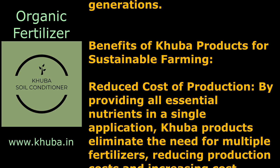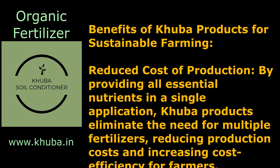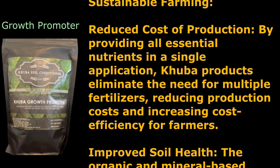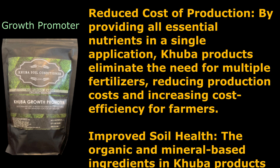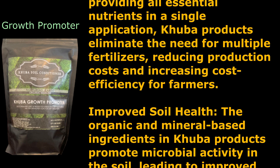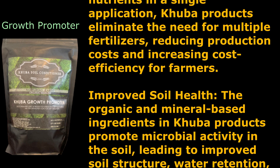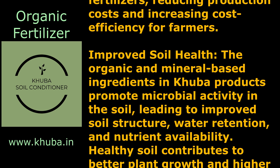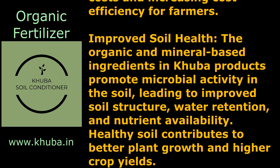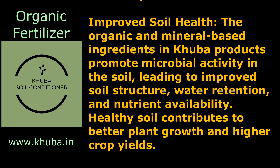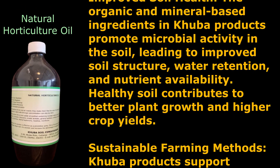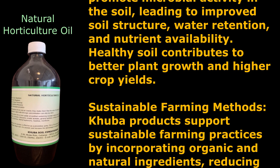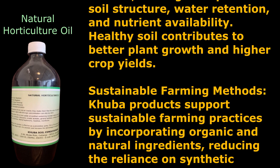Benefits of Kuba products for sustainable farming. Reduced cost of production: by providing all essential nutrients in a single application, Kuba products eliminate the need for multiple fertilizers, reducing production costs and increasing cost efficiency for farmers. Improved soil health: the organic and mineral-based ingredients in Kuba products promote microbial activity in the soil, leading to improved soil structure, water retention, and nutrient availability. Healthy soil contributes to better plant growth and higher crop yields.